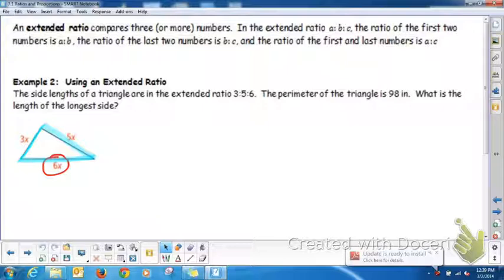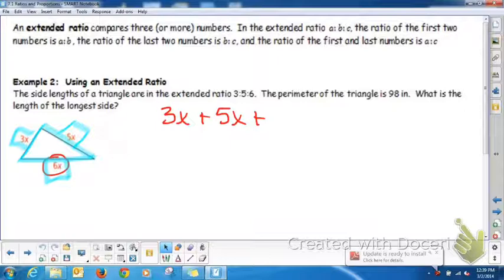Well, the 3 to 5 to 6 means three parts of the whole are this side, five parts of the whole are this side, and six parts of the whole are this side. So we can add them together. 3x and 5x and 6x equals the total of 98 inches.